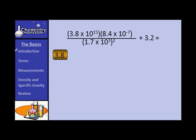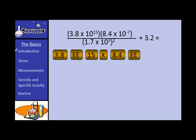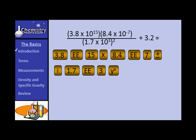Input 3.8, then use the EE, EXP, or EEX key — whatever your exponent key is — but do not use the 10-to-the-x key. The EE key means 'times 10 to the whatever' already for you. Then put in the exponent. Multiply by 8.4, then use your exponent key, then put in 7 and change the sign. Be careful: if you press plus/minus before you put in the 7, it may change the sign on the 8.4 instead. Then divide by 1.7 EE 3, and use the y-to-the-x key with 2 to square that quantity.